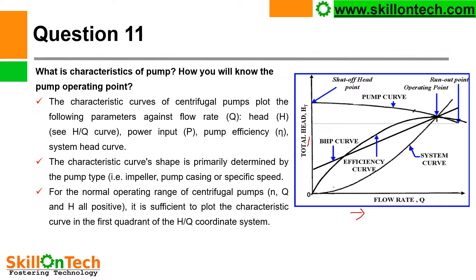Power input — this is the BHP curve. Pump efficiency — this is the pump efficiency curve. And this is the system head curve, which shows the resistance of the system against fluid flow. The characteristic curve shape is primarily determined by the pump type, impeller, pump casing, or specific speed. For the normal operating range of a centrifugal pump, N, efficiency, flow, and head are all positive, so it is sufficient to plot the characteristic curve in the first quadrant of the HQ coordinate system.